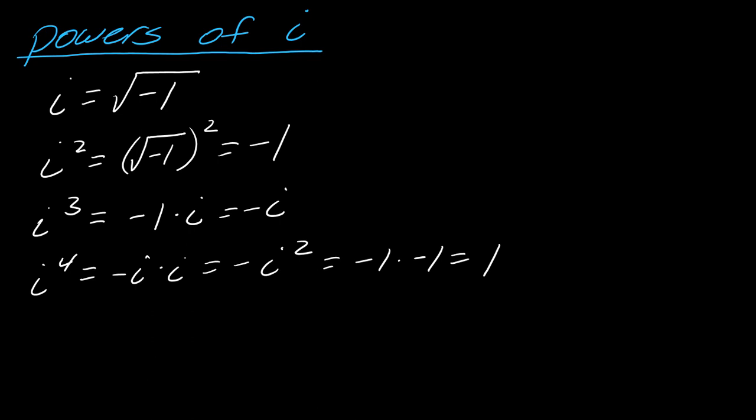And now if I go to i to the fifth, what do I get? Well, if I multiply my previous step, i to the fourth, that was just 1. If I multiply this by i, now I start back at i again. So I'll summarize that over here. We have i, i squared equals negative 1, i cubed was negative i, i to the fourth was 1, and then i to the fifth went back to i.